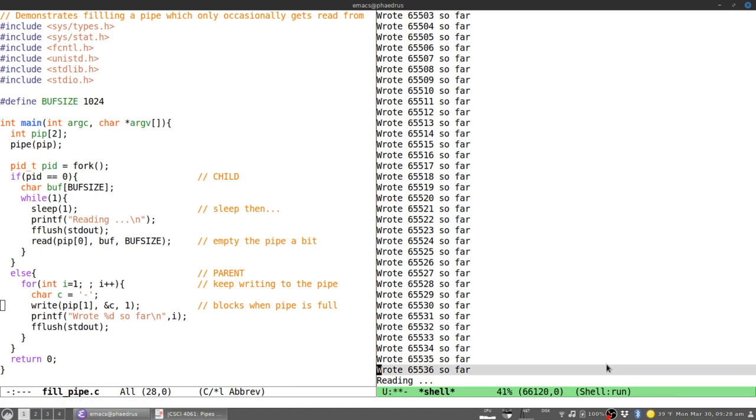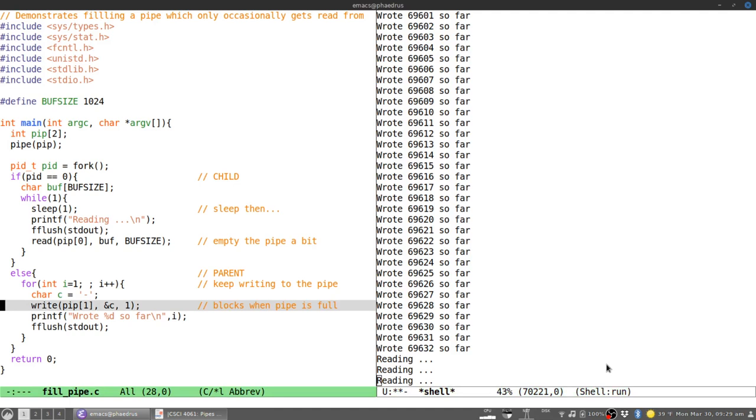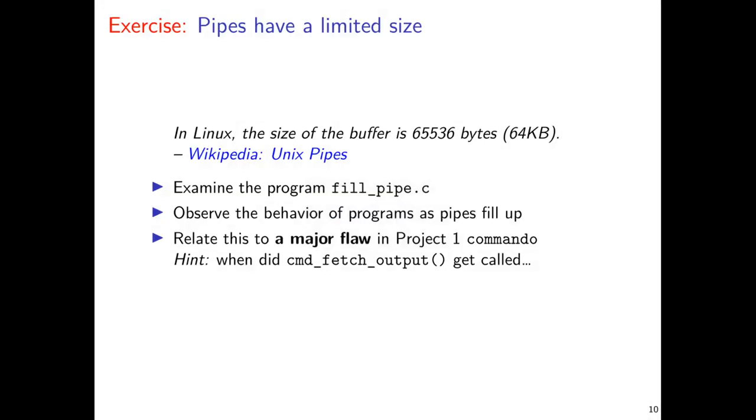Part of this to understand is that the pipe is filling up and the child, which is reading blocks of 1,024 characters, is going to read off a hunk of this stuff. The parent is not going to get a chance to write back to that pipe again until the pipe has been emptied some. At each stage, the parent is trying to write into a full pipe and can't do so. It blocks on that until the child wakes up and reads some stuff from it.